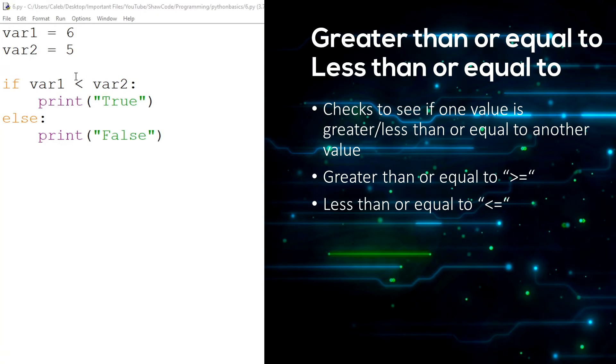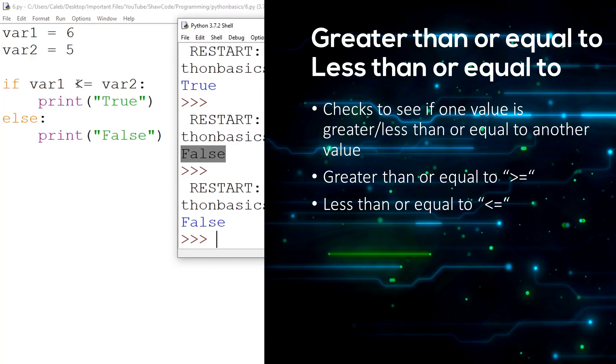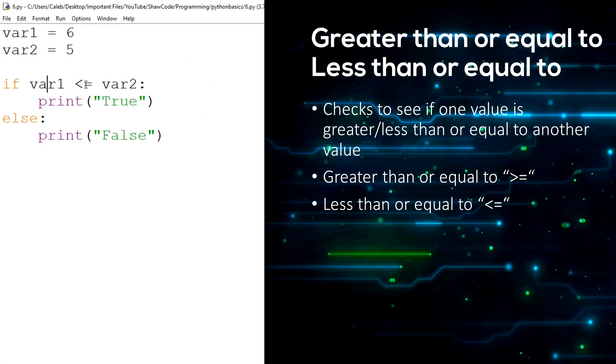And then there's also this thing called greater than or equal to and less than or equal to. So less than or equal to, you just add an equals on the end. And what this does is it checks if var1 is less than or equal to var2. Let's run it first off. We'll get false because var1 is greater than, it's not less than and it's not equal to, so we'll just go to this else statement and print false.